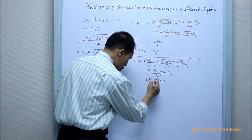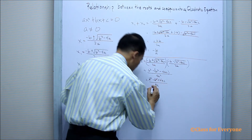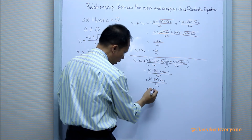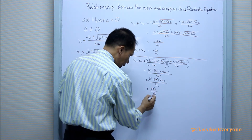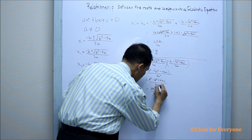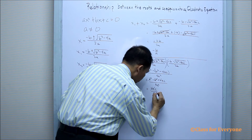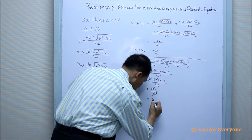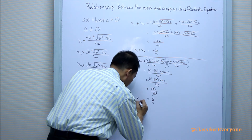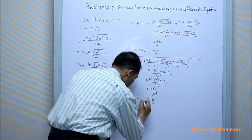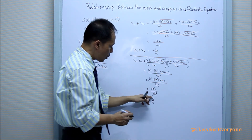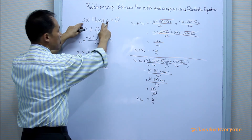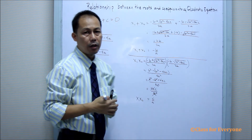Simplifying: b squared minus b squared cancels, leaving 4ac over 4a squared. We can cancel 4a, so what's left is just c over a. Therefore, the product of the roots is equal to c over a, where c and a are the coefficients of the quadratic equation.